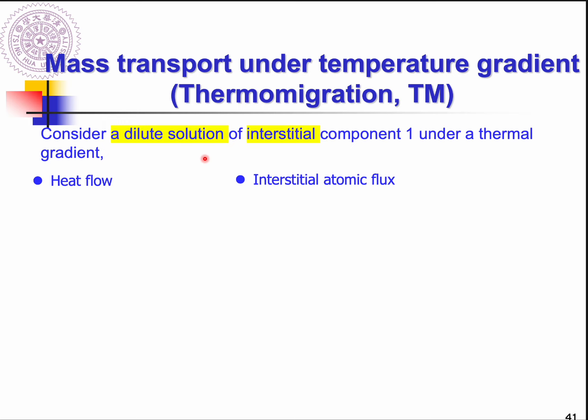Let's try to quantitatively analyze this effect. The material we are dealing with is a dilute solution of interstitial component 1. It is dilute, meaning the concentration of these interstitials is very low. How many driving forces apply on these materials? The first is the temperature gradient, and since you also have interstitials, the second possible driving force would be the chemical potential gradient.